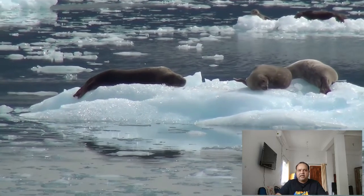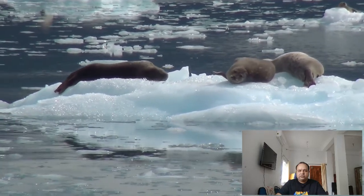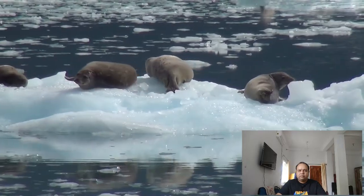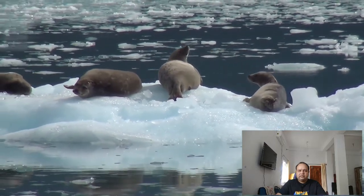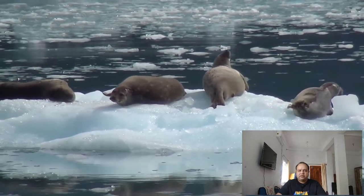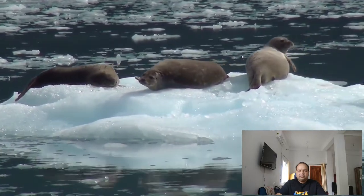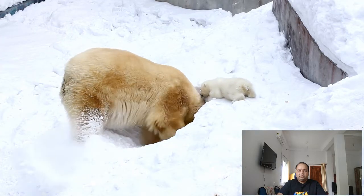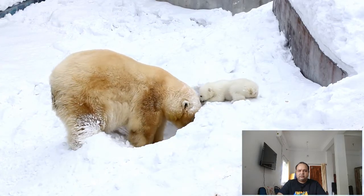Feedback loop: melting ice reduces the reflective surface, causing more solar radiation to be absorbed, which then releases heat to the atmosphere. This causes more warming and so more ice melts — this is known as a feedback loop.